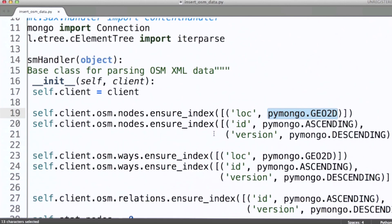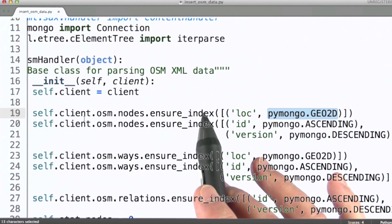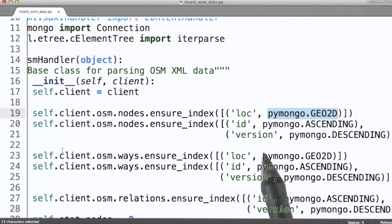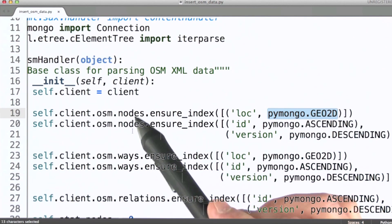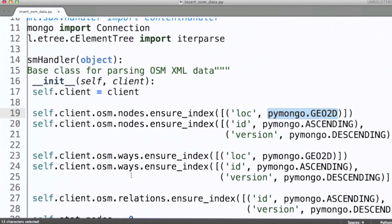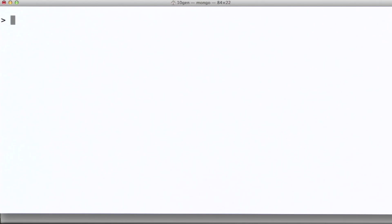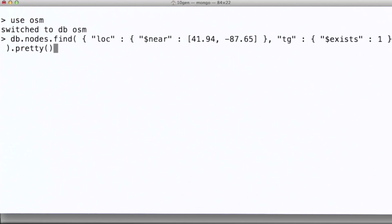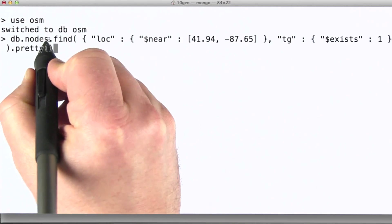Now let's take a look at an actual query. And bear in mind that the query that we're going to look at in the Mongo shell is a query against the collection that we created using this script. This is exactly the script that I used to create this collection and store documents in it within MongoDB. What I need to do is make sure that I'm using the OSM database.